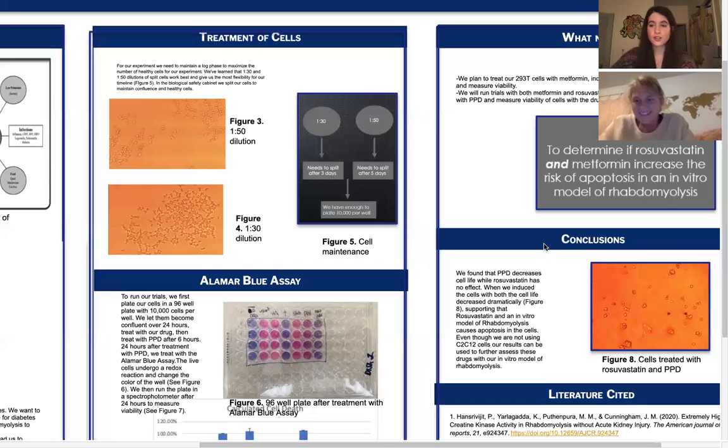And so for our conclusion, we did find that PPD decreases cell life in our in vitro model of rhabdomyolysis. PPD decreases cell life, and rosuvastatin has virtually no effect. But when we did induce the cells with both rosuvastatin and then PPD, they did dramatically decline. The viability did, and in figure eight, you can see this is a picture of one of the wells from figure six of the cells treated with rosuvastatin and PPD.